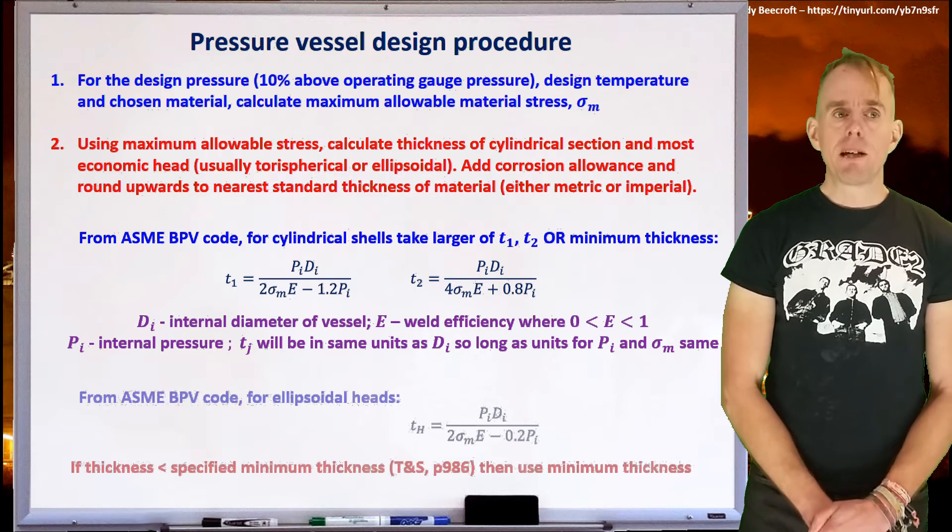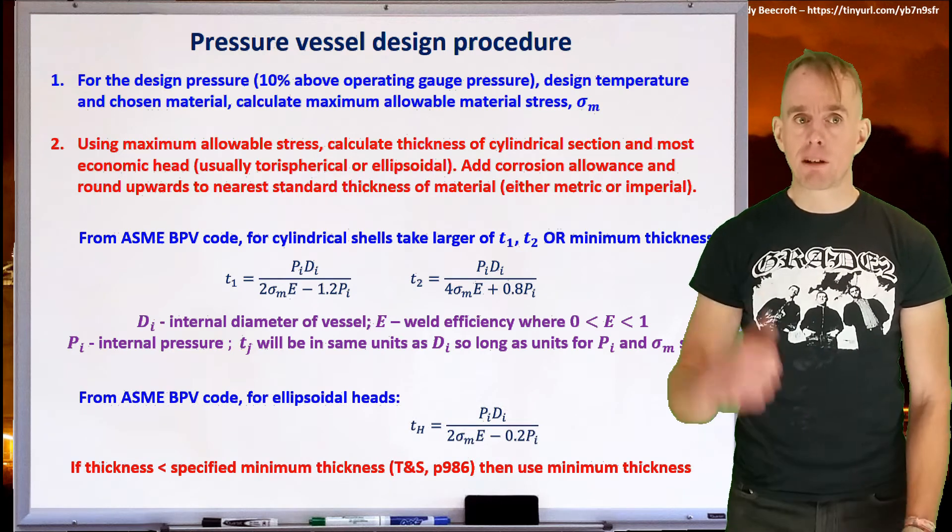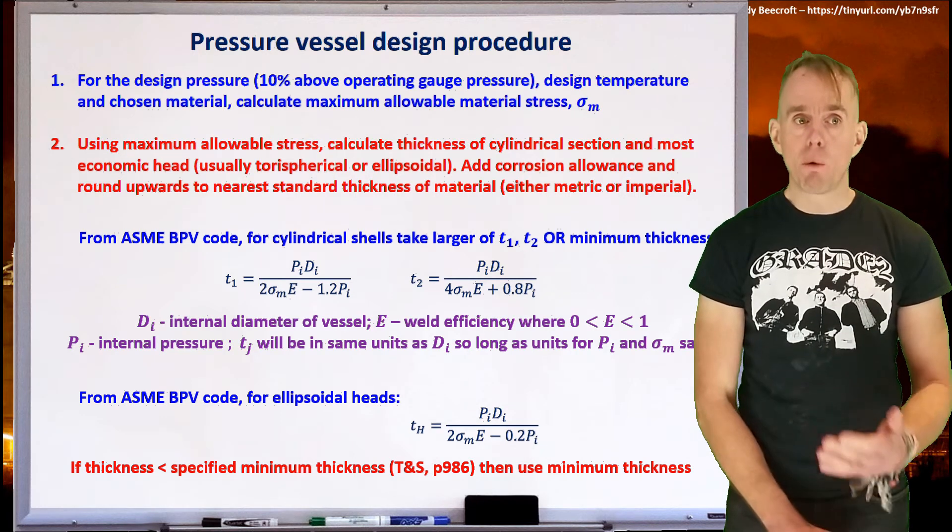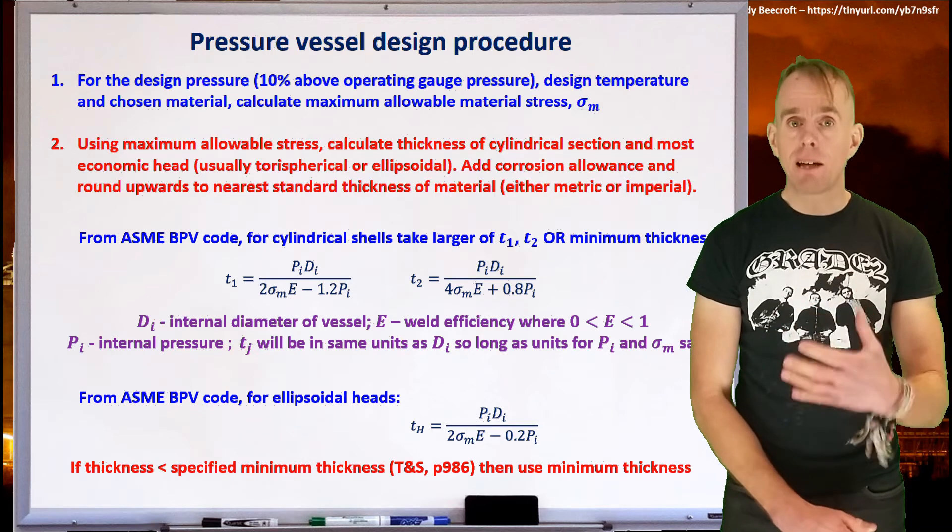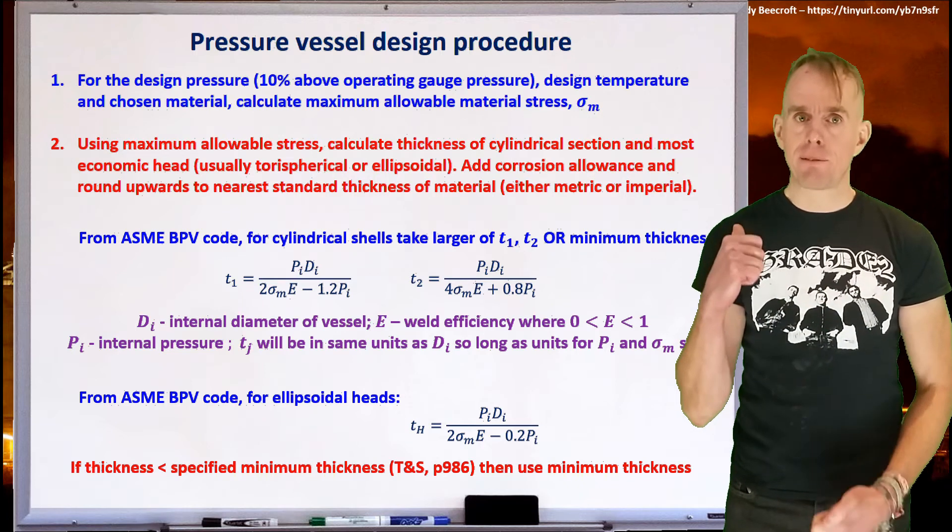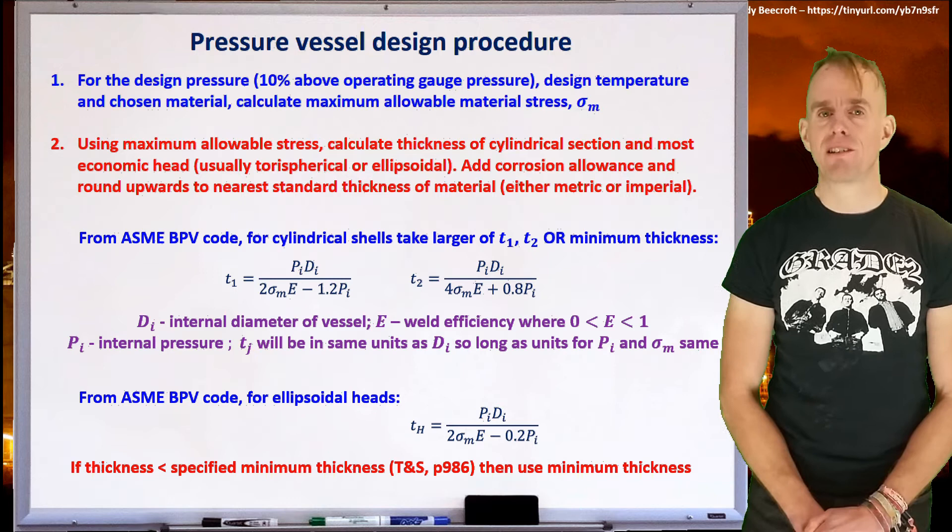What you might find for low pressure systems is that the minimum thickness is some two or three times greater than the thickness that you calculate from these formulae, and so therefore you use the minimum thickness. Now, if we're thinking about vessel heads, additional formulae relate to those. For example, ellipsoidal heads, you can use the formula here on the whiteboard. For more formulae, have a look at Towler and Sinnott. And again, the same rule applies to the head as to the cylindrical shell. If the thickness calculated by that formula is below the minimum thickness, use the minimum thickness.